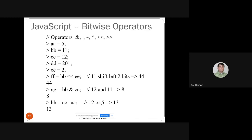There are also bitwise operators for bitwise operations. For example, a = 5, b = 11, c = 12, d = 201, e = 2. Shifting 11 left by two bits gives 44. The bitwise AND (conjunction) between 11 and 12 gives 8. The bitwise OR (disjunction) uses the vertical bar. The XOR uses the caret (^). Tilde (~) is for bitwise negation. Left shift (<<) and right shift (>>) are also available — basically all the bitwise operators available in other languages.